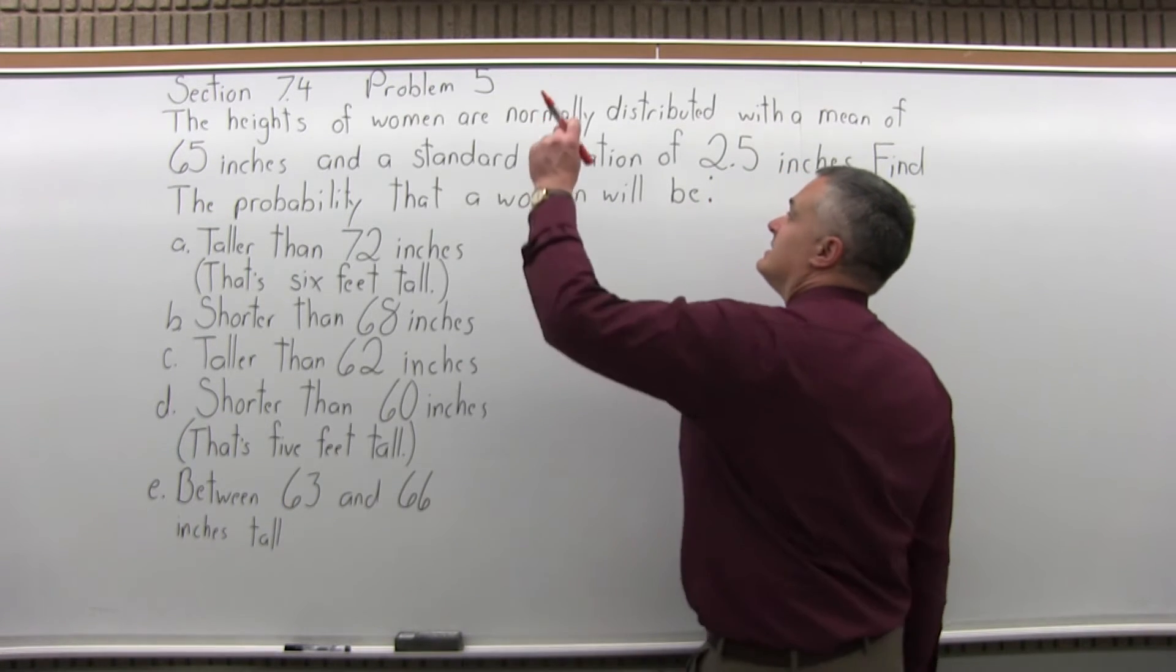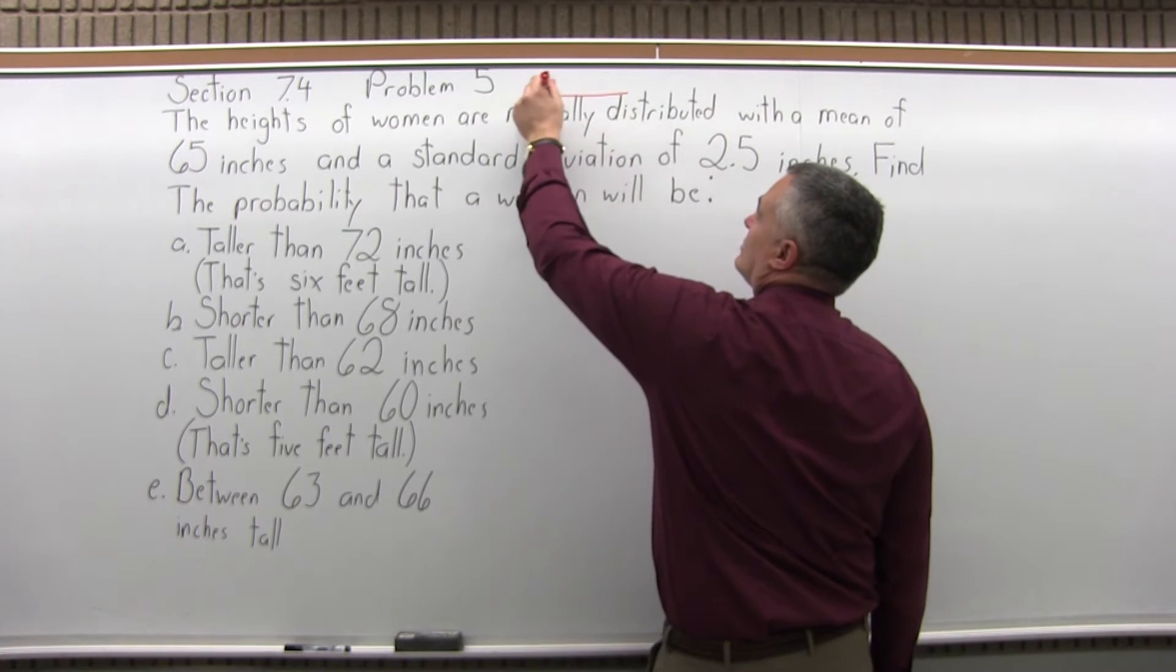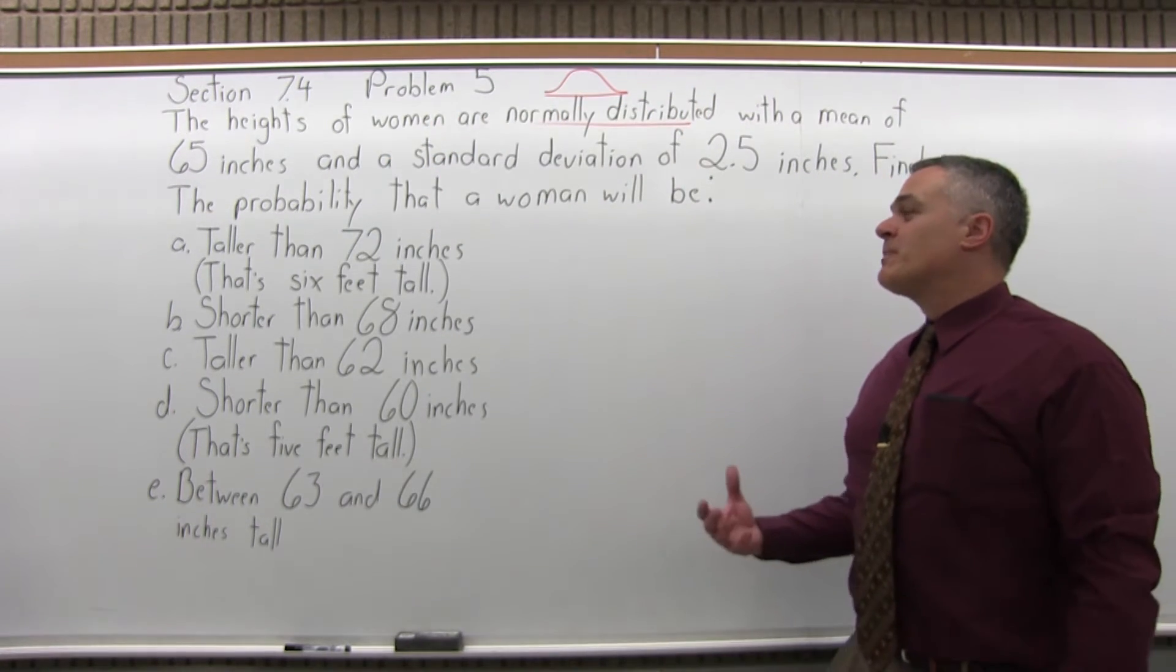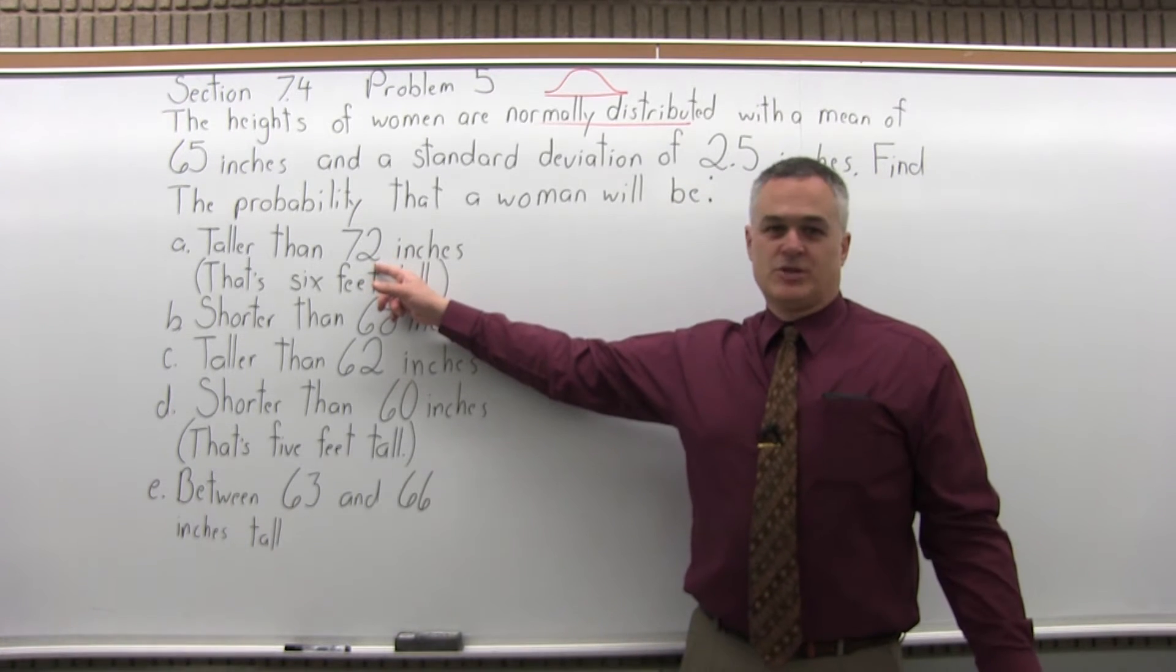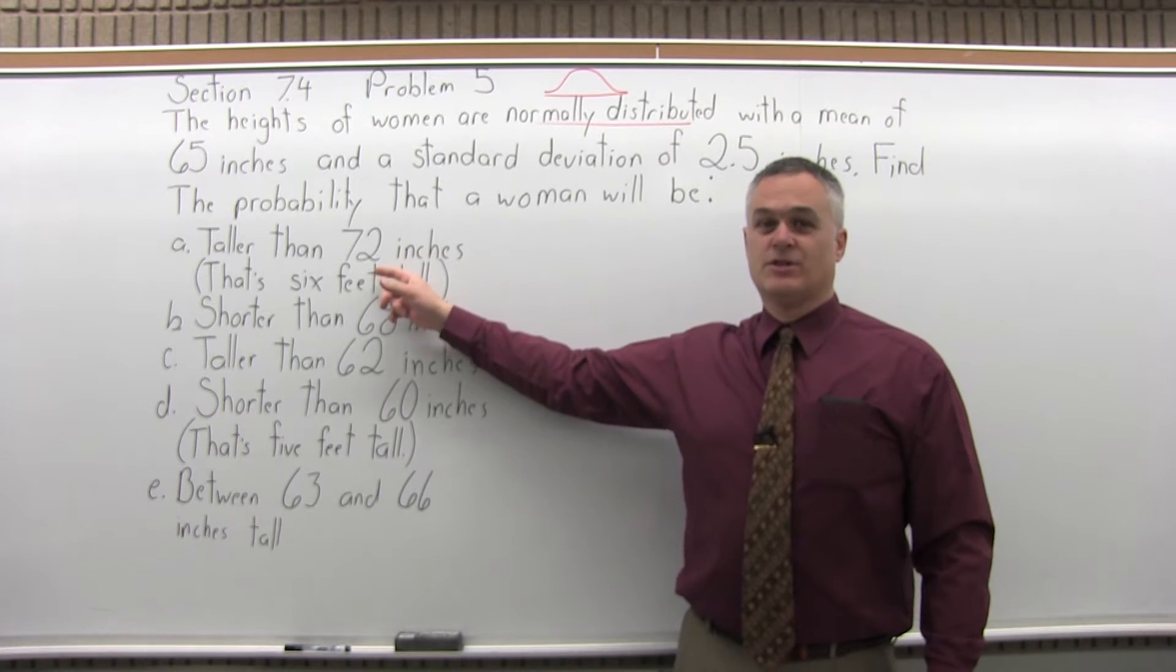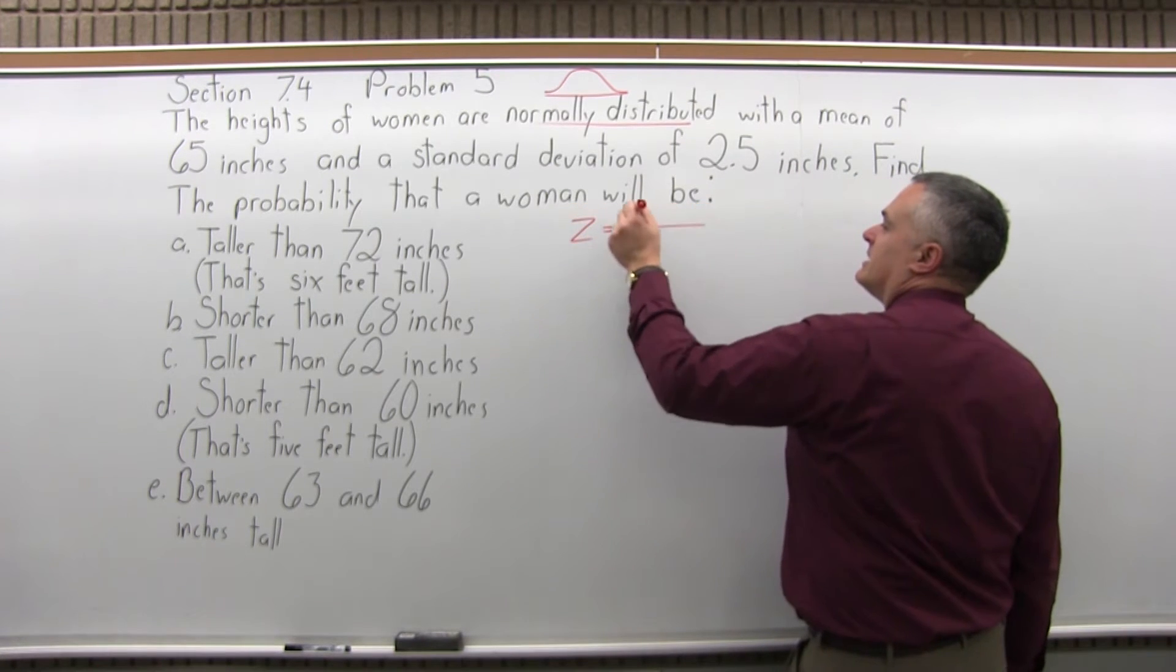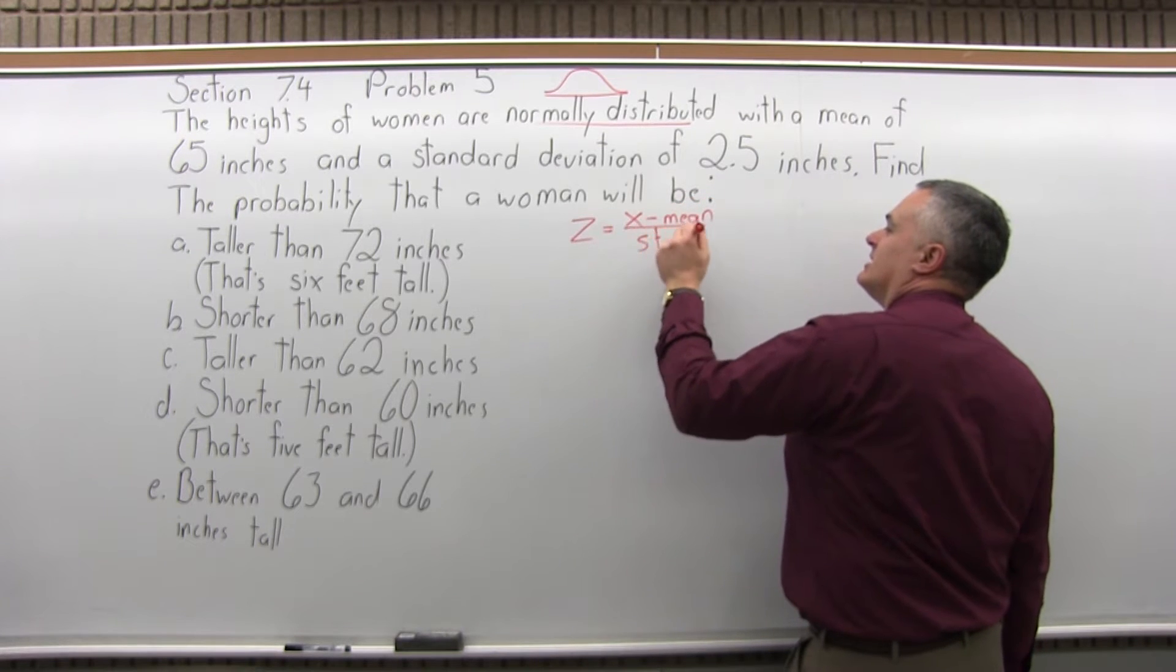So because the problem says normally distributed, what that means is I get to use the bell curve and the chart that goes with it. That's what normally distributed means. Now I cannot put in a 72 inch woman in the standard normal chart and get any type of answer for it. I have to find the z-score for a 72 inch tall woman.